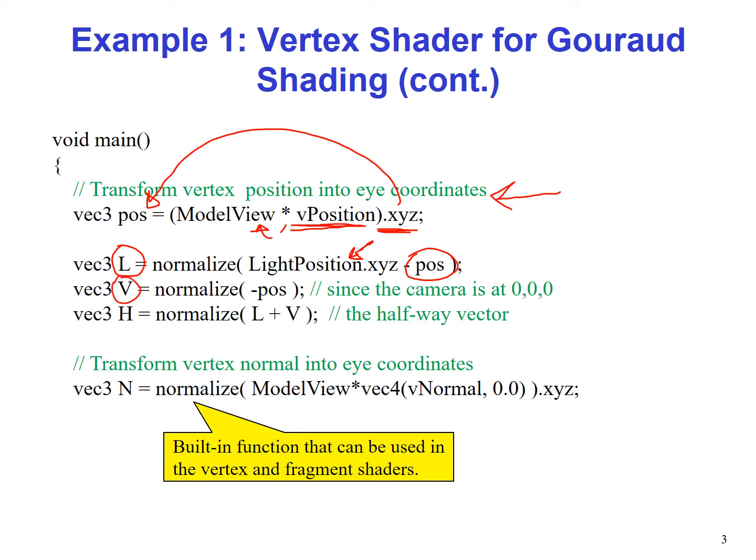the viewer vector, the V vector, by taking the negative of position. Now we haven't written anything here because the camera is assumed to be at (0,0,0) at the origin. That's the default location of the camera, so (0,0,0) minus the position of the vertices gives us the V vector.